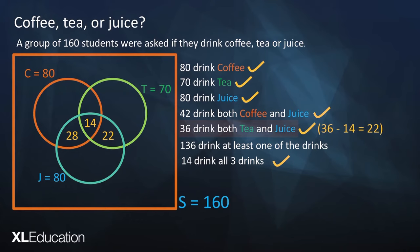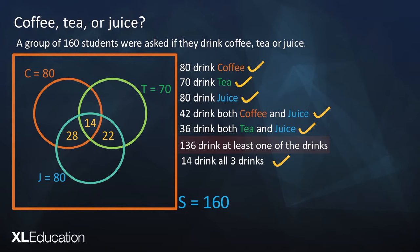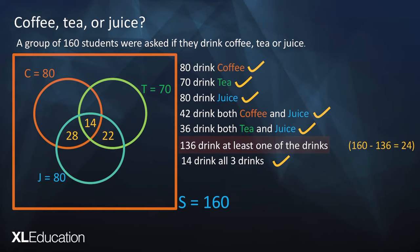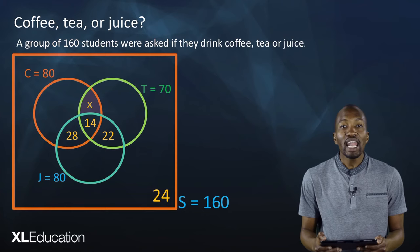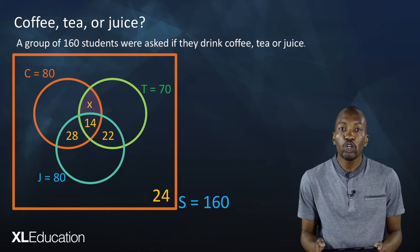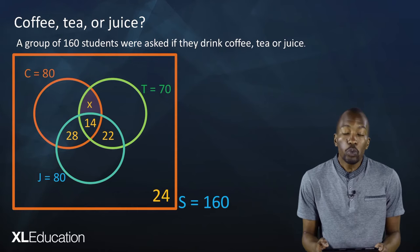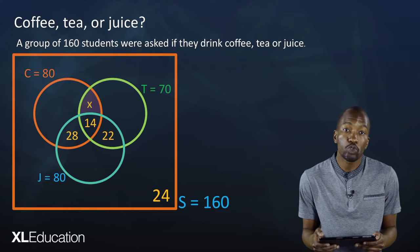136 drink at least one of the drinks. This will help us find the number of people who do not drink any of the three drinks. We simply say 160 minus 136, which gives us 24. Now we do not know the intersection of coffee and tea — in other words, we don't know how many people drink both coffee and tea — so we'll simply put an x there.